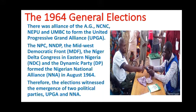Two political parties came together as a result of alliances: UPGA on the one hand, and the NNA on the other hand. These were the two alliances that contested the 1964 general elections.